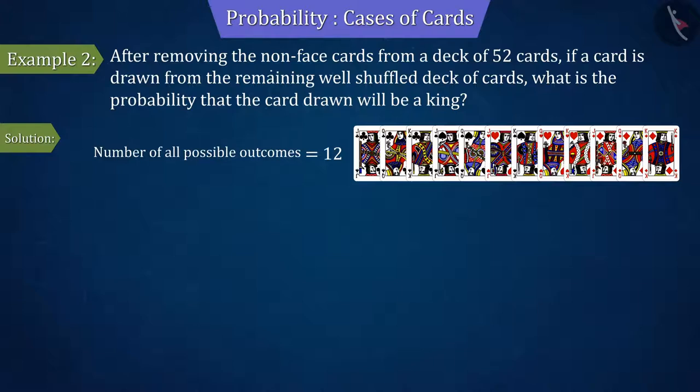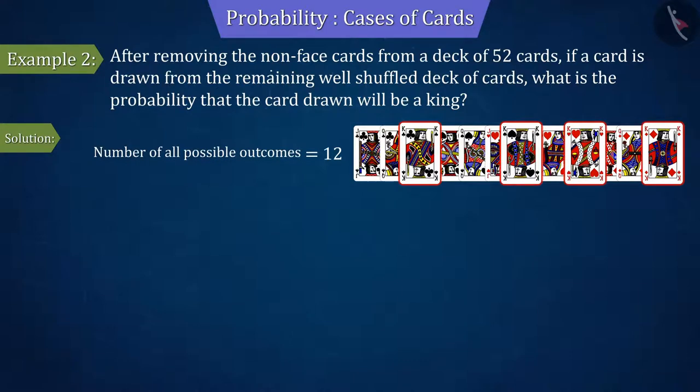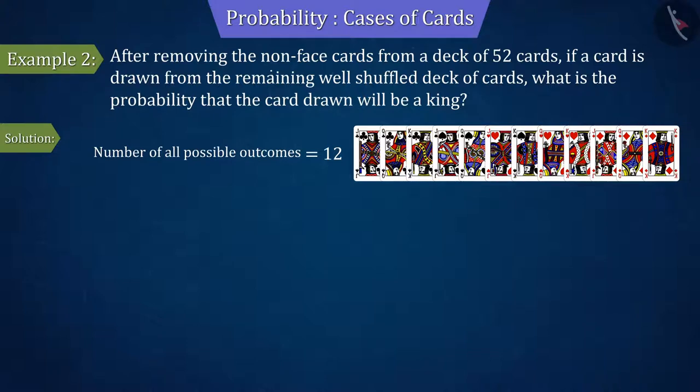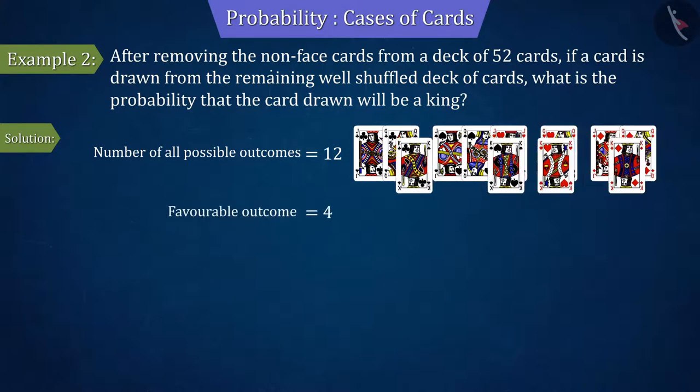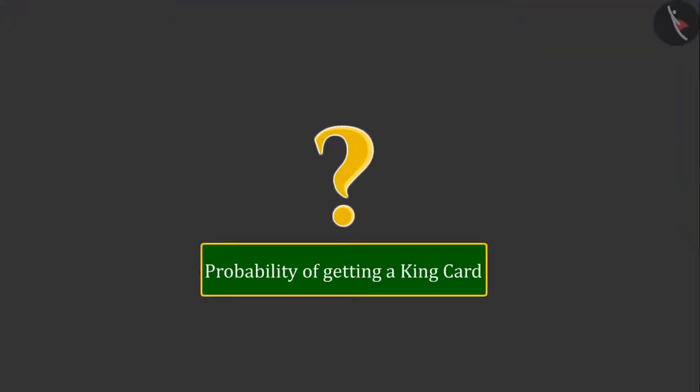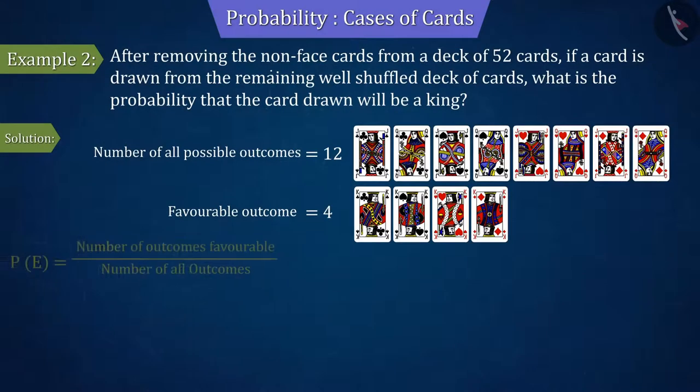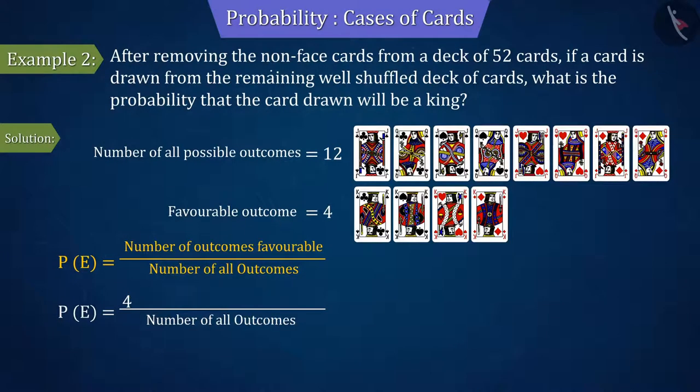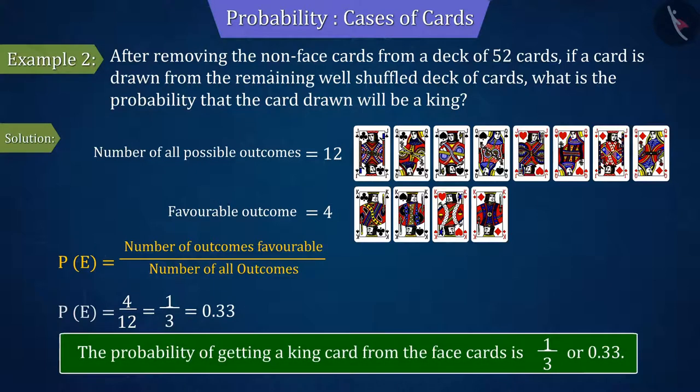And in these face cards, there are four king cards. This denotes the favourable outcome of the event, because we have to find the probability of getting a king card. Therefore, by substituting the values in the probability formula, the probability of getting a king card from the face cards is 4 by 12 or 0.33.